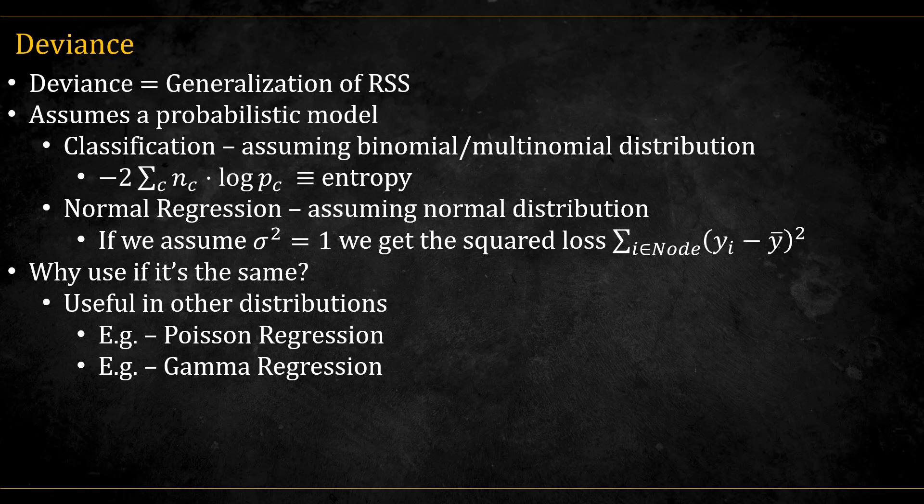Deviance is useful if we want to assume other distributions on the data. For example, if we assume our data comes from a Poisson distribution, but I won't get into this in this video.